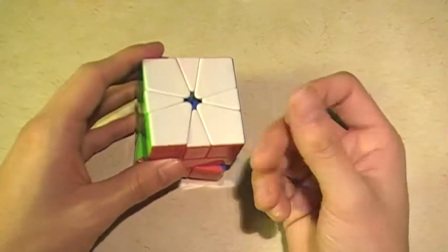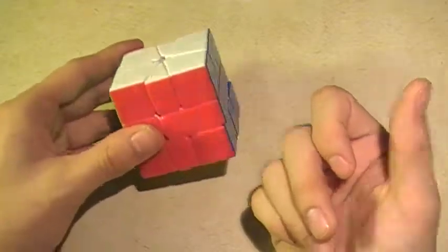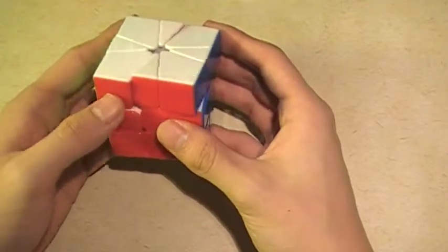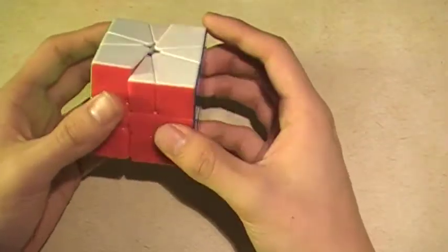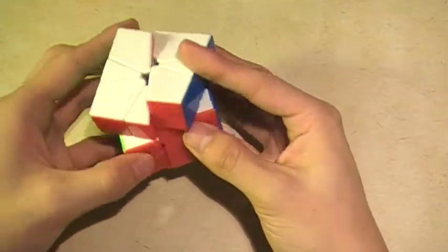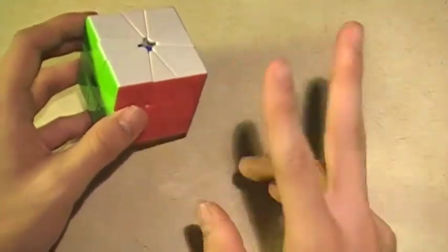For 5x5 there is the Yuxin, or even the Wuhuang, which I haven't tried yet. But for me it would be the Yuxin. For 4x4 it would be the Yuxin or the Mini Aosu, one of those two. It's pretty simple and you can narrow it down to two.